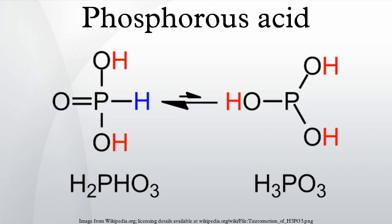Preparation. HPO(OH)2 is the product of the hydrolysis of its acid anhydride: P4O6 + 6 H2O → 4 HPO(OH)2. An analogous relationship connects H3PO4 and P4O10.